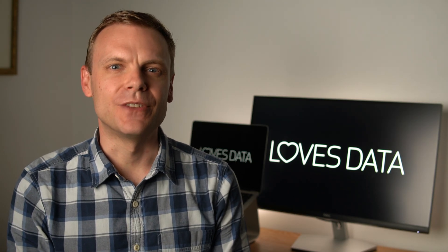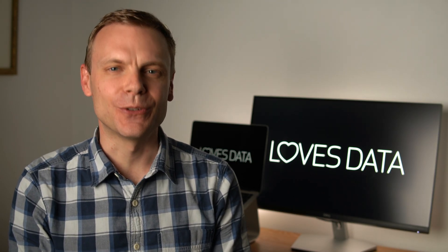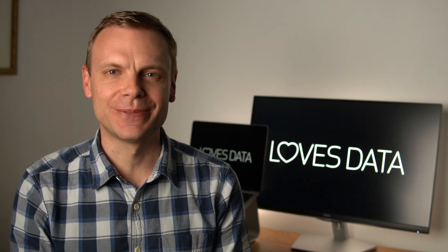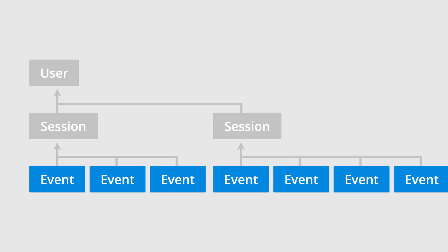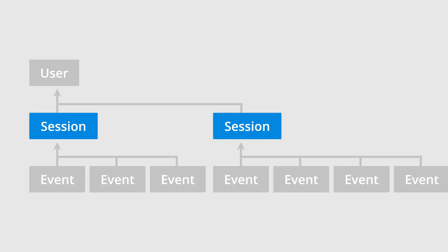Overall, the different types of segments let you control how much detail is included or excluded from your report. Here we can see the relationship between events, sessions, and users. When someone comes to your website and loads a page and performs other actions like clicking an outbound link, watching a video, or making a purchase, then all of these actions are sent to Google Analytics as events. Events are then combined into sessions. A session is a single visit to your website. So if someone comes to your website on Tuesday morning and navigates through a number of pages, then all of these events will be combined into a session.